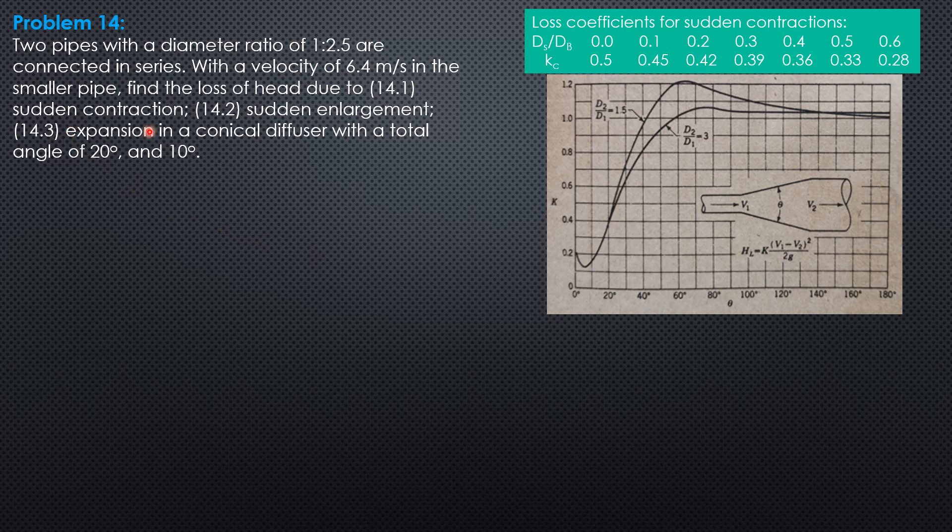For sudden contraction, the head loss due to sudden contraction is simply k sub c times velocity head in the smaller pipe. And the velocity head in the smaller pipe is 6.4.